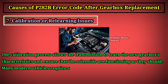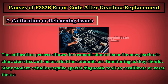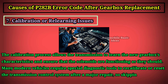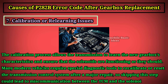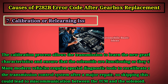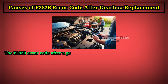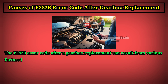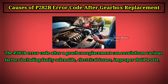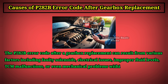Many modern vehicles require special diagnostic tools to recalibrate or reset the transmission control system after a major repair, so skipping this step could lead to miscommunication between the TCM and the solenoid. The P282B error code after a gearbox replacement can result from various factors including faulty solenoids, electrical issues, improper fluid levels, TCM malfunctions, or mechanical problems within the transmission.